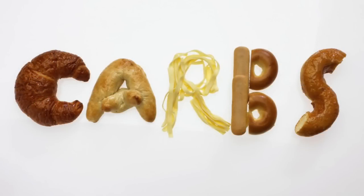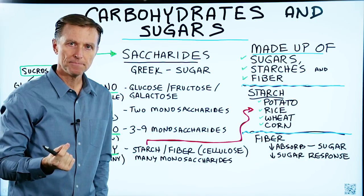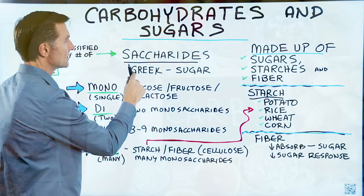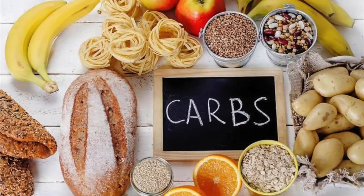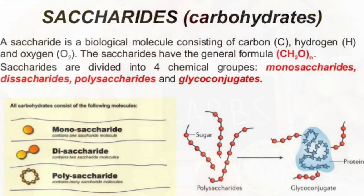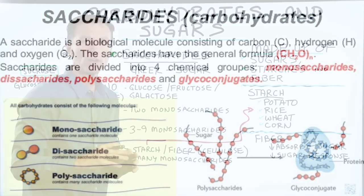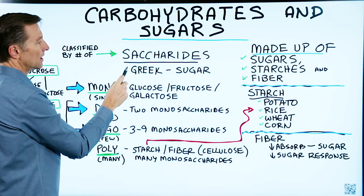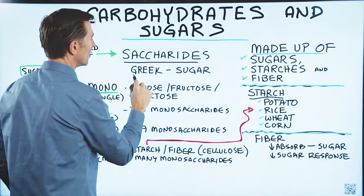Carbohydrates are made up of sugars, starches, and fiber. The biochemical name for a carbohydrate is a saccharide. Carbohydrates are classified by the number of saccharides. The Greek word for saccharides is sugar.